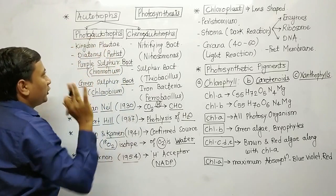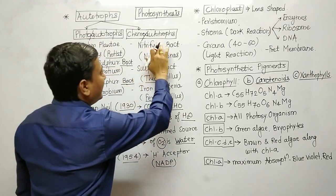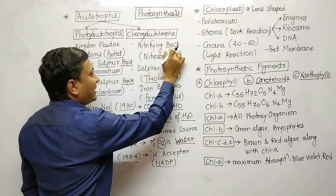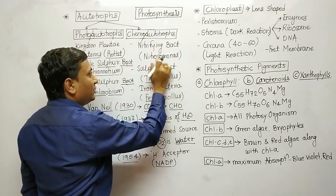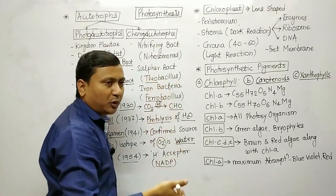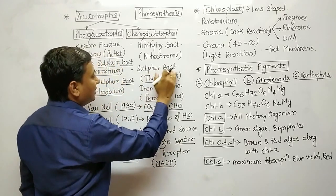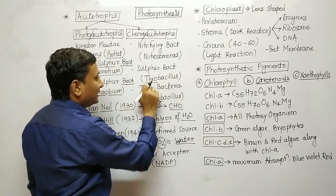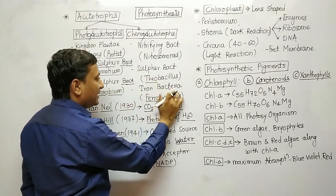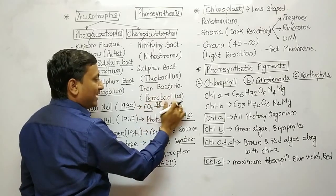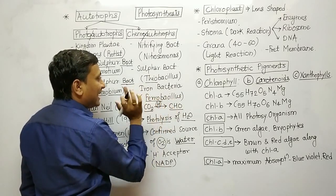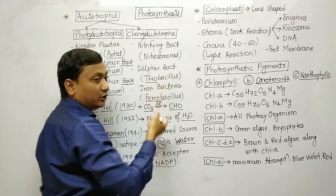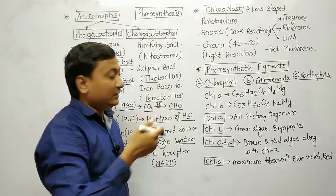In chemo-autotrophs, examples include nitrifying bacteria (Nitrosomonas), sulfur bacteria (Thiobacillus — 'thio' means sulfur), iron bacteria (Ferrobacillus — 'ferro' means iron). These are common names you need to know.